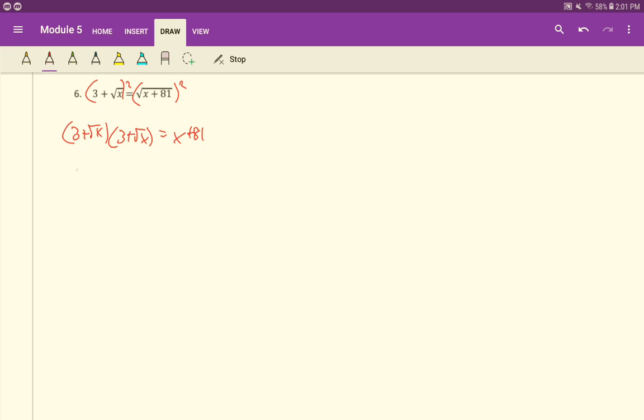So it'll be 9. 3 times 3. 3 times root x will be a 3 root x. Root x times 3 is another 3 root x. And then root x times root x is just root x quantity squared. Now, we'll simplify here. So we'll have x plus 6 root x. And I'm going to kind of write it in somewhat of a standard form here. Plus 9 equals x plus 81.